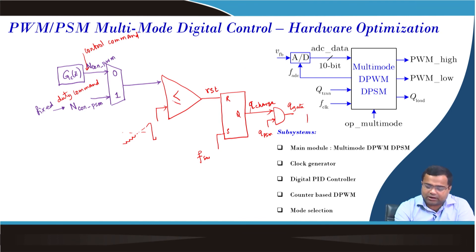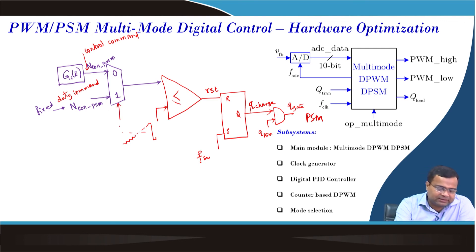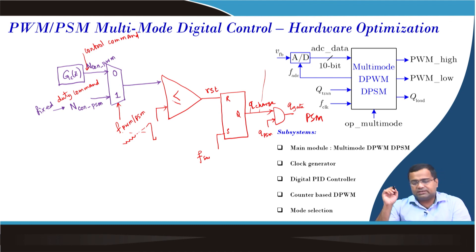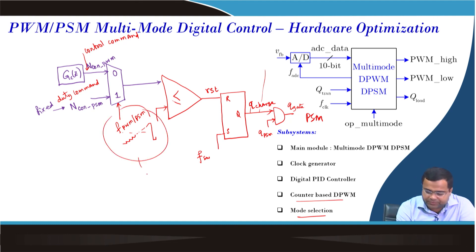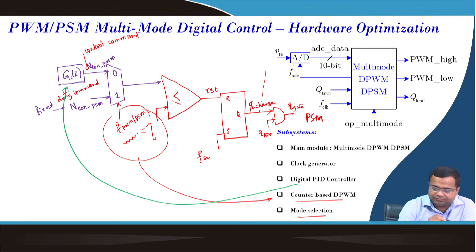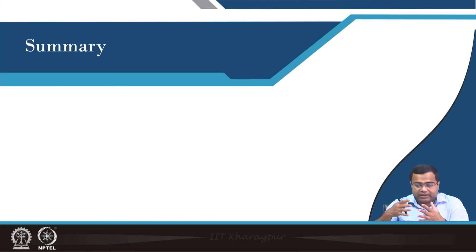This block represents PSM mode operation. Under PSM mode, there will be a select line to choose between PWM and PSM. If it is 0 it selects PWM; if it is 1 it selects PSM. During PWM, the signal goes straight to the gate drive circuit. This requires a mode selection block. The counter for DPWM comes from here. We want to optimize hardware; it requires a digital PID controller, a clock generator, and the main module.